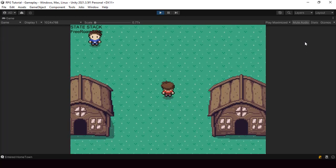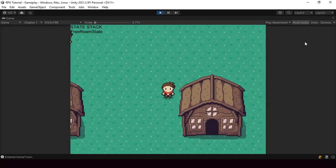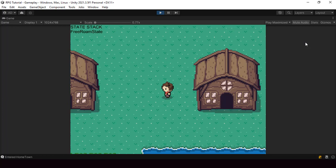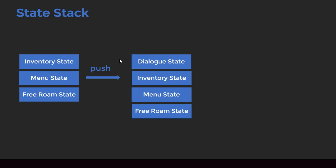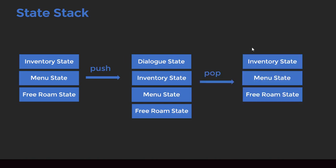Hey everyone! Welcome to part 101 of my Pokemon game series in Unity. In this video we'll start refactoring our game to use a state stack architecture for handling states instead of using an enum. We'll be building a state stack or state machine from scratch and we'll test it out by pushing and popping states to it. The state stack architecture is a lot more scalable than our current approach and it'll make it much easier to add features like layered menus in the future.